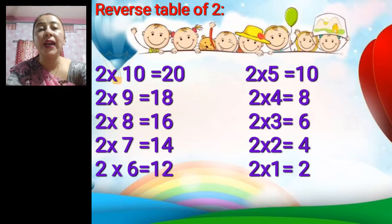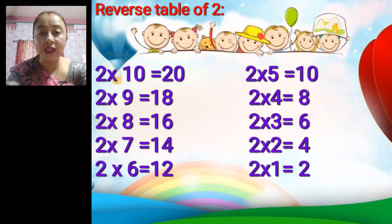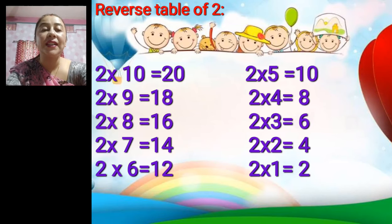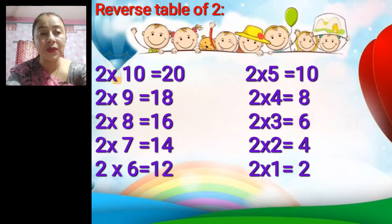Two nine's are eighteen, two eight's are sixteen, two seven's are fourteen, two six's are twelve, two five's are ten, two four's are eight, two three's are six, two two's are four, and two one's are two. In this way we will do the table of three also.